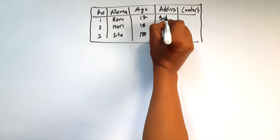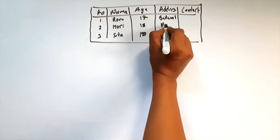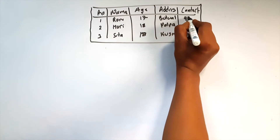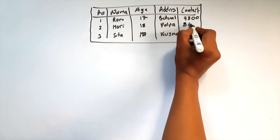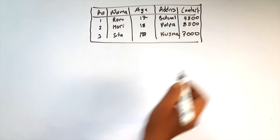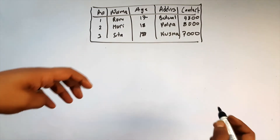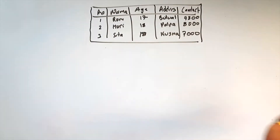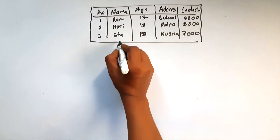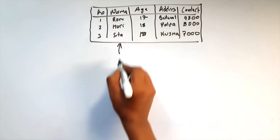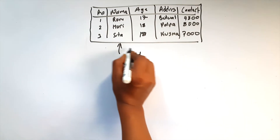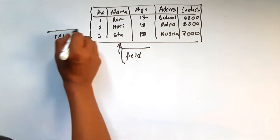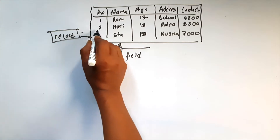In the table: Address — Butwal, Palpa Kusma. Contact — 1000, 7000. In a database table, the vertical column is called a field, and the horizontal row is called a record. A complete horizontal entry is a row or record.